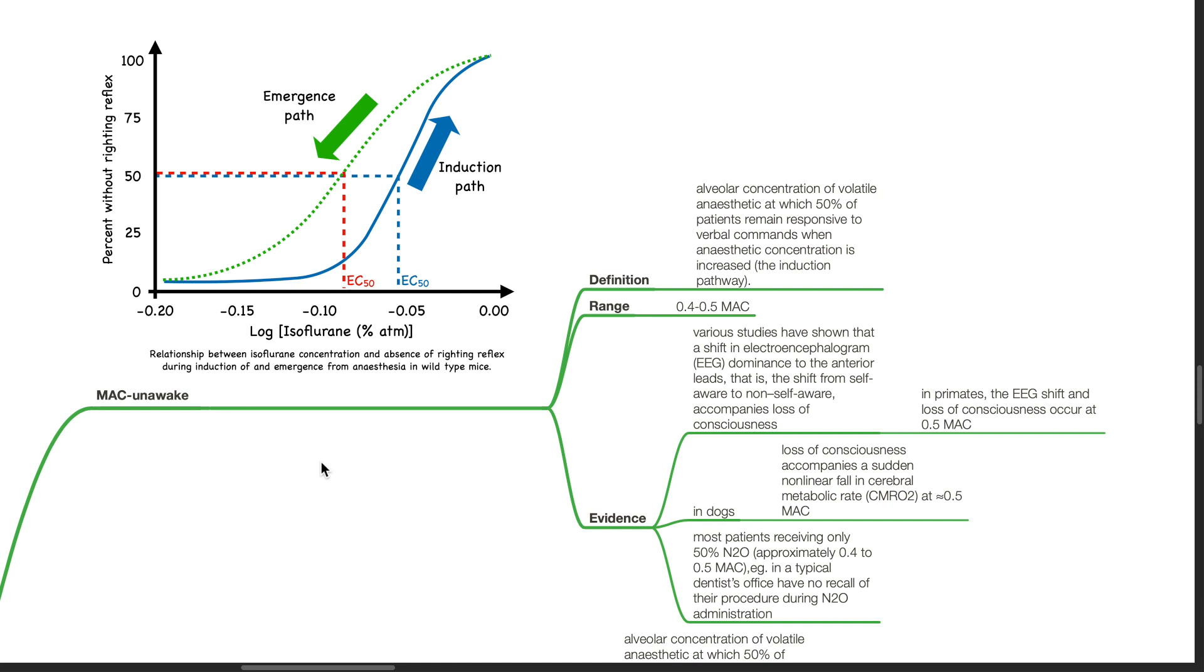Evidence: various studies have shown that a shift in EEG dominance to the anterior leads, i.e. the shift from self-aware to non-self-aware, accompanies loss of consciousness. In primates, the EEG shift and loss of consciousness occur at 0.5 MAC.